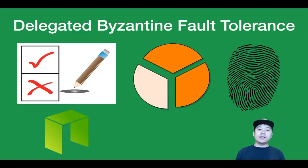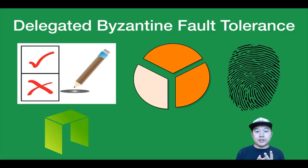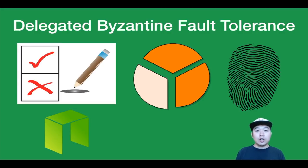Next up is Delegated Byzantine Fault Tolerance. This is where ordinary nodes like you and I can elect bookkeeper nodes, which must have special equipment, dedicated internet connections, and a certain minimum number of coins staked. The bookkeepers are randomly chosen to add blocks to the chain and 66% or more must agree for a block to get accepted. This is super fast and scalable, but the bookkeeper identities are known — so if governments try to censor them, that would be a problem. A famous project that implements this approach is NEO.